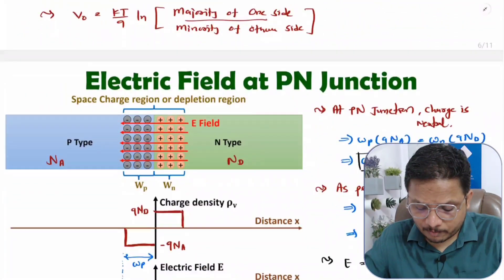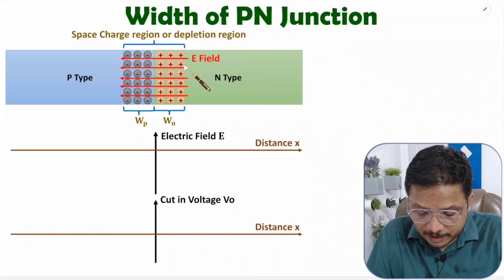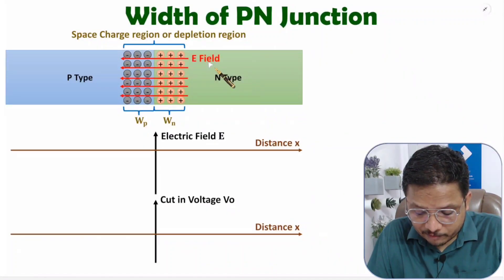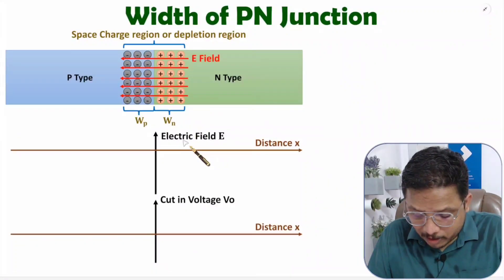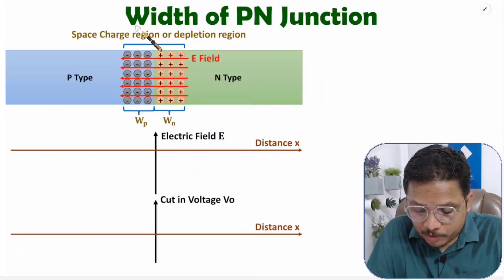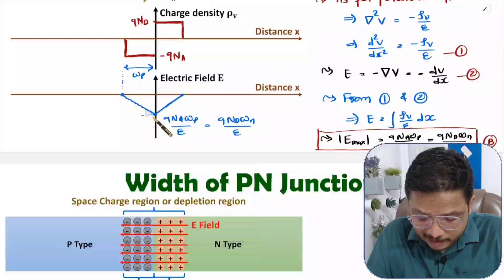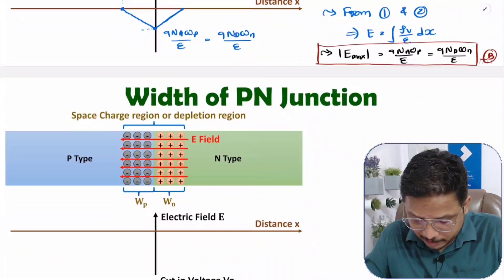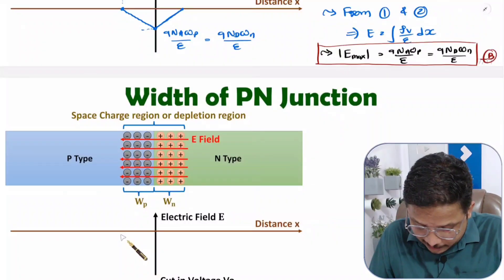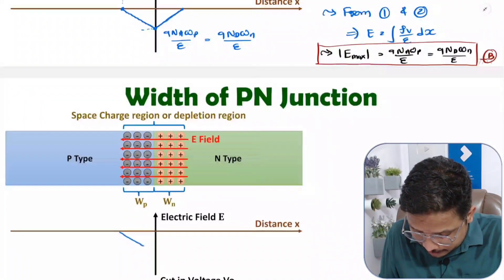In my last video I explained how to calculate electric field. First you need the electric field to calculate the cutting voltage, and from the cutting voltage we can derive the width of the pn junction. I already covered electric field in detail, so here I am just directly using it — the electric field behaves as we have seen in that video.